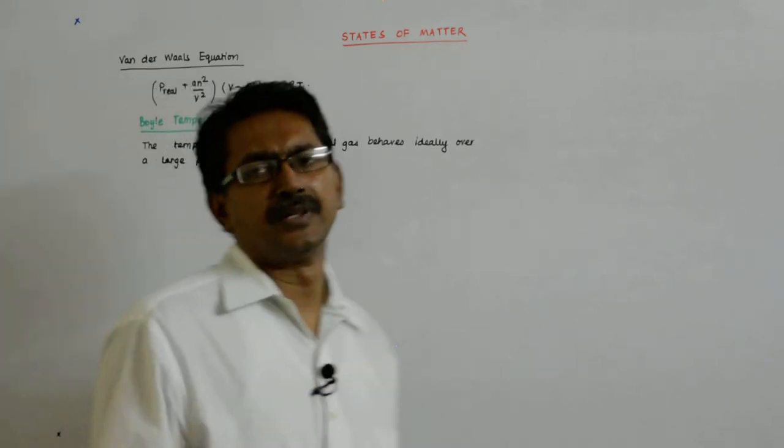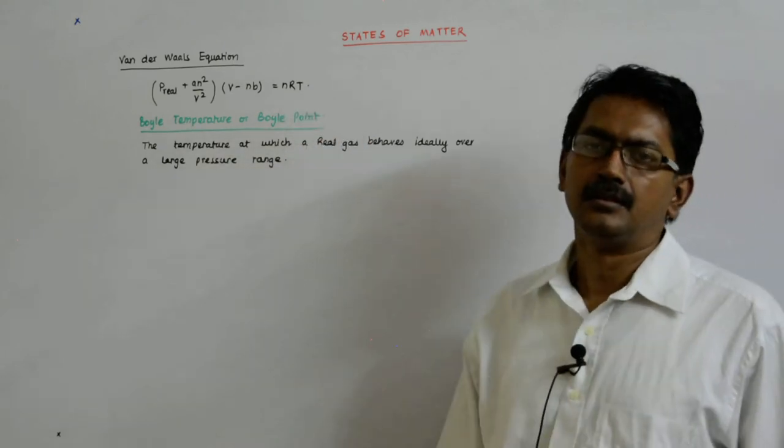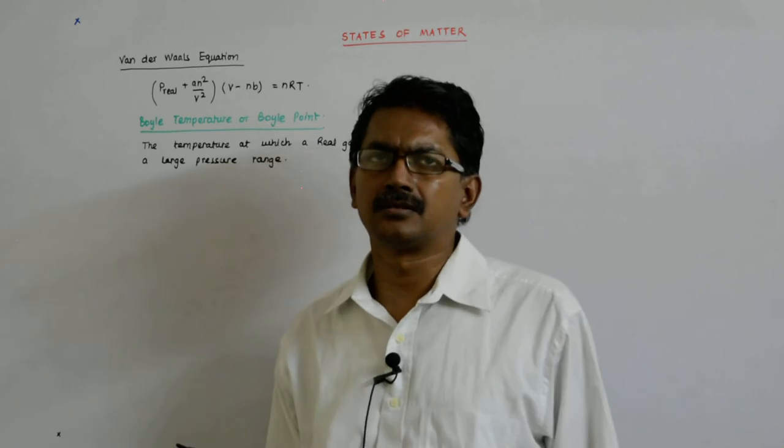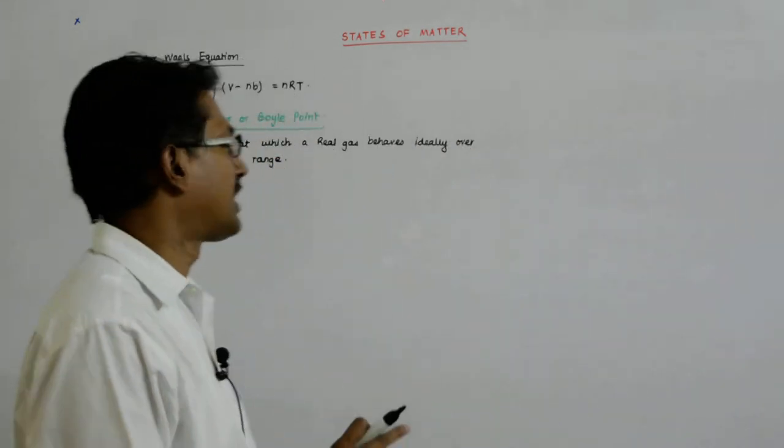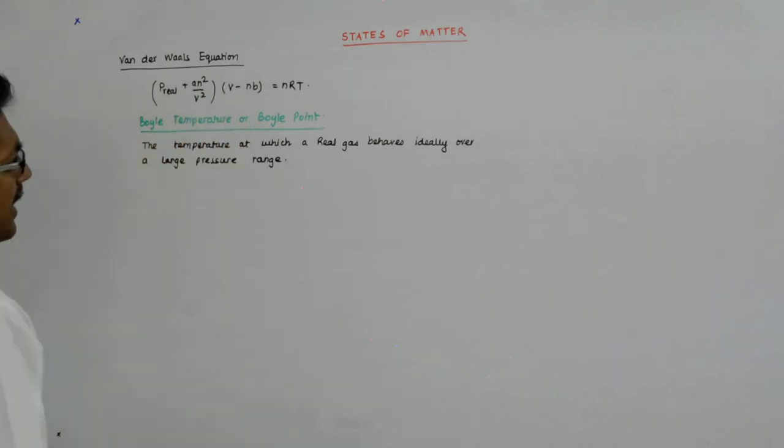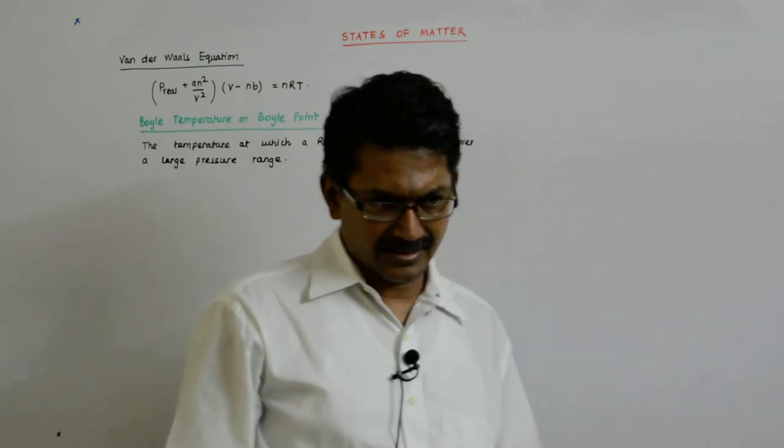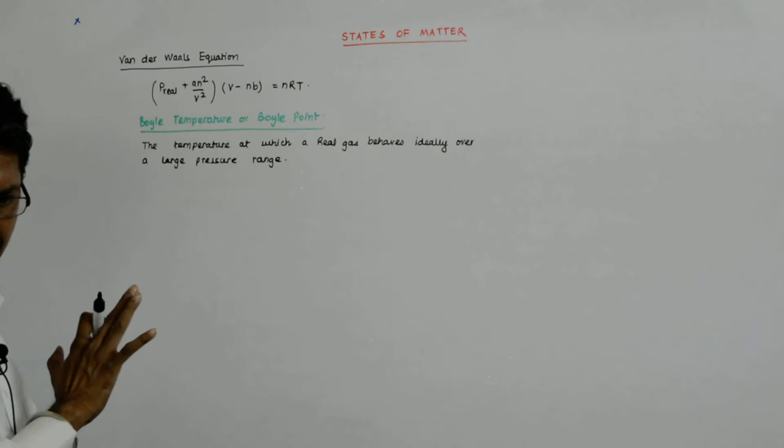Now, what should happen at boil temperature? It is actually derivable from here. But it will require some fundamentals of calculus to reach that point, and some fundamental of Taylor series expansion. But it can be done.